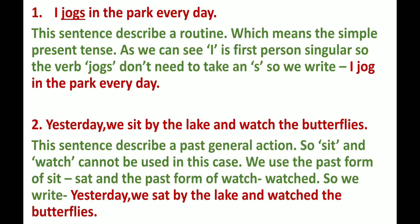Number 1: I jogs in the park every day. This sentence describes a routine, which means we use the simple present tense. As we can see, 'I' is first person singular, so the verb 'jogs' doesn't need to take an S. So we write: I jog in the park every day.